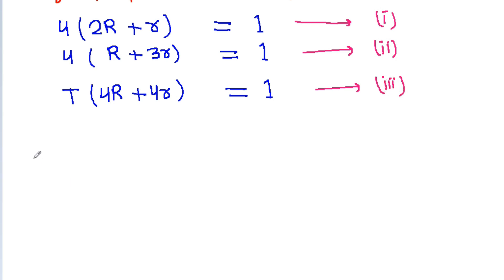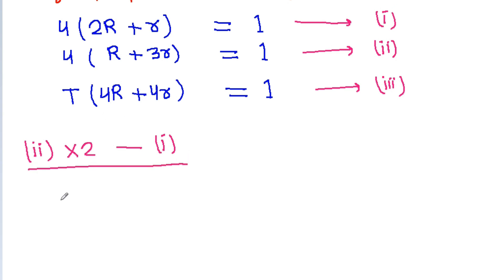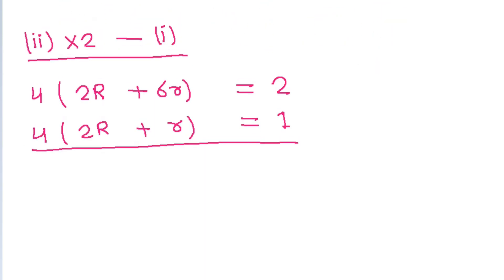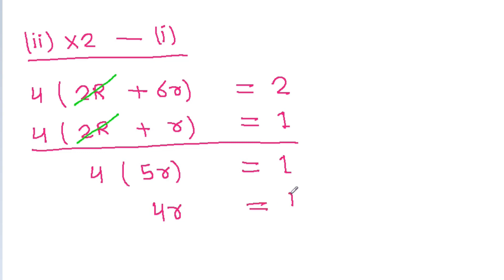Now if we multiply equation 2 by 2 and subtract equation 1 from it, then equation 2 times 2 will be 4 times (2R + 6r) equals 2, and equation 1 is 4 times (2R + 1r) equals 1. If we subtract, the capital R terms cancel and we get 4 times 5 times small r equals 1, or we get 4 times small r equals 1 by 5.